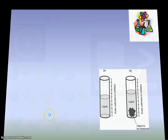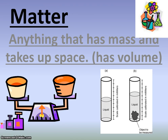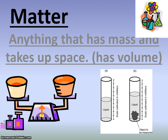Matter is anything that has mass and takes up space. When I say it takes up space, I mean that it has volume. Mass is obviously measured with the triple beam balance, and volume is measured with graduated cylinders, or by measuring the length, width, and height of an object. Matter — anything that has mass and takes up space — pretty much covers everything in the universe except for energy.